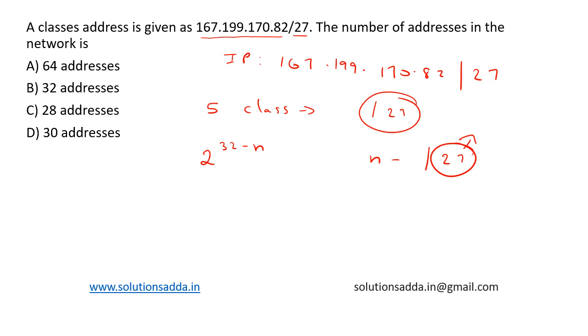So the number of addresses in the network can be defined as 2 to the power 32 minus 27. This is equal to 2 to the power 5, which is equal to 32. So here there are 32 addresses available, so option B, 32, is the correct answer here.